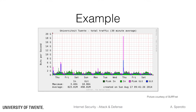Let's have a look at an example. This plot shows the traffic to and from the University of Toronto network, as seen from our provider Surfnet, in August 2014. Again, the target was an IRC server. The attack used in this case was a distributed NTP reflection and amplification attack, which caused a peak of 19 Gbps.